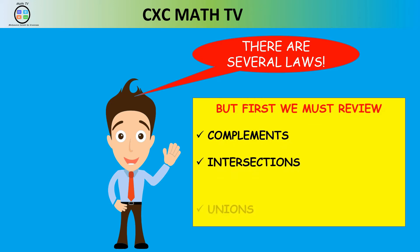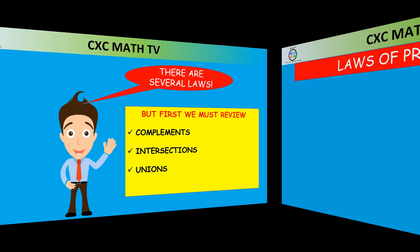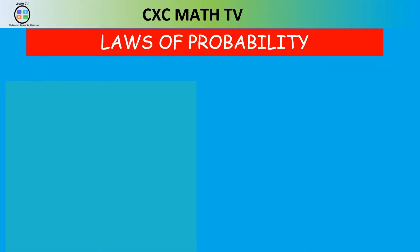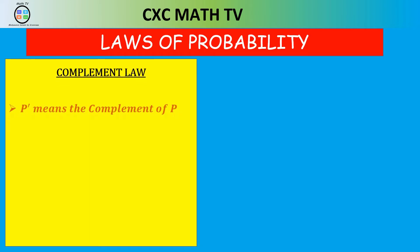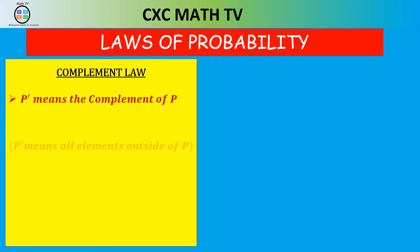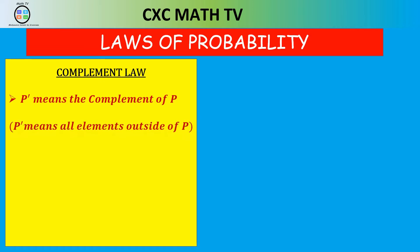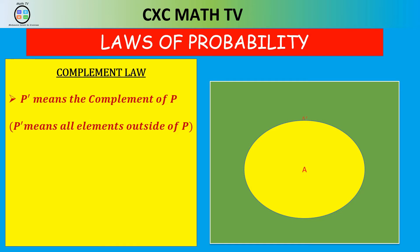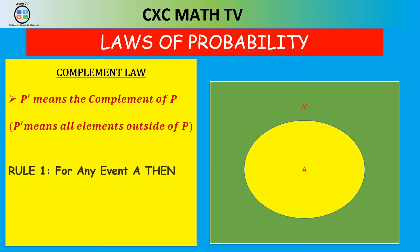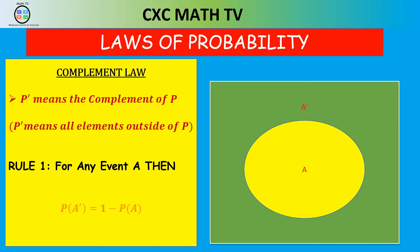The first law of probability is the complement law. The complement of P, written as P prime, means all elements outside of P. So the first rule is: for any event A, the probability of A complement is equal to 1 minus the probability of A. In the Venn diagram, everything outside of A but inside the universal set is A complement.